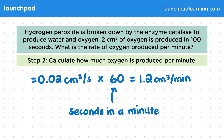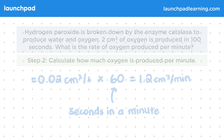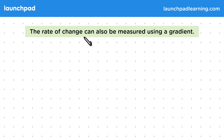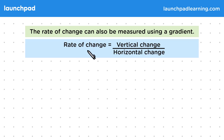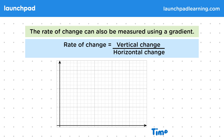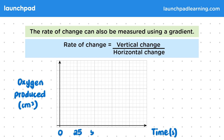What if the data were on a graph? The rate of change can also be measured using a gradient. The rate of change would equal the vertical change divided by the horizontal change. On this graph, we have time in seconds on the x-axis and oxygen produced in centimetres cubed on the y-axis. We'll split time into 25-second intervals and oxygen produced into 1 centimetre cubed intervals.